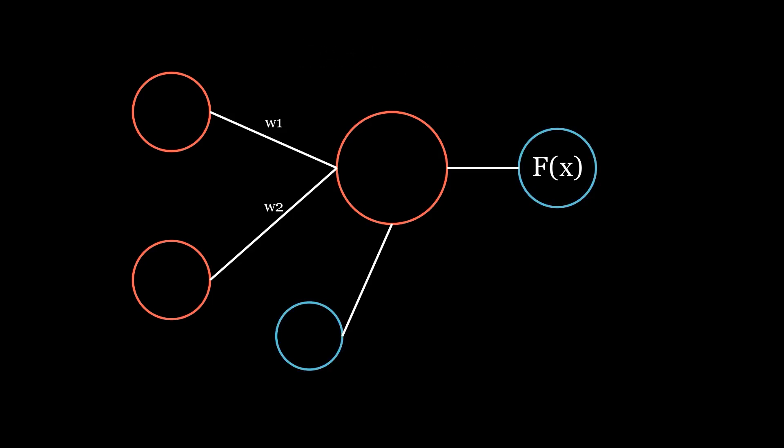Notice that two new elements have popped up here. This one is called the activation function. Picture it as an element that converts data from the output neuron into something more human-friendly. Now we need to set our function. Let's say if the number in this neuron is below zero, the activation function will output off, and if it's higher than zero, it will output on.